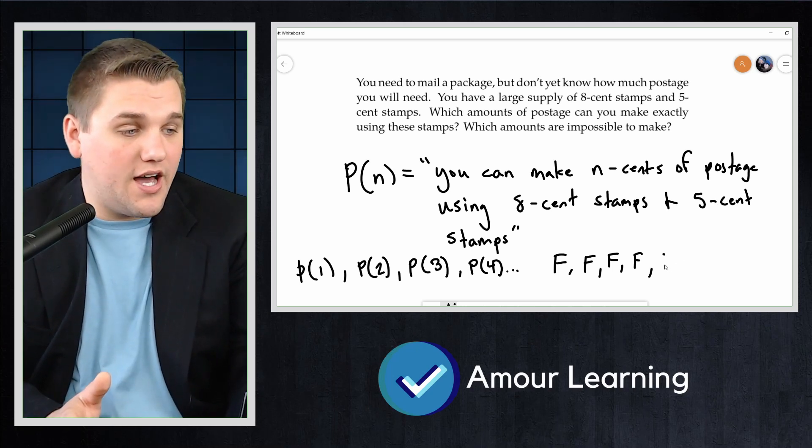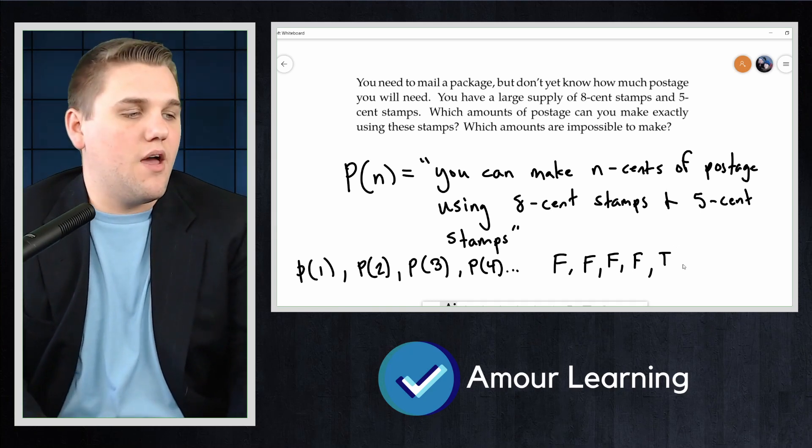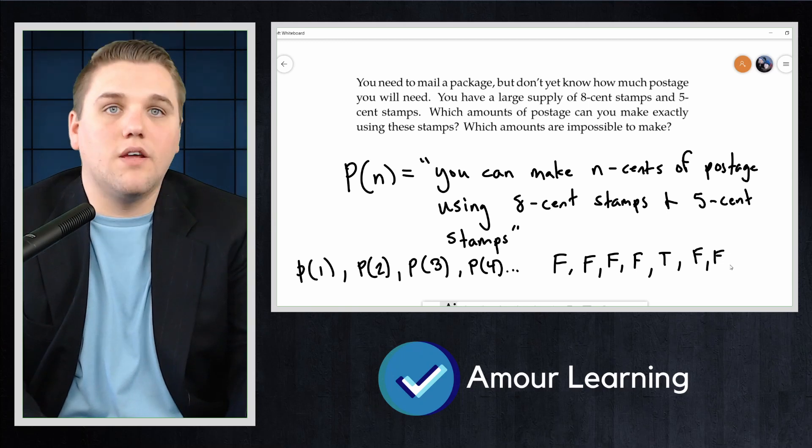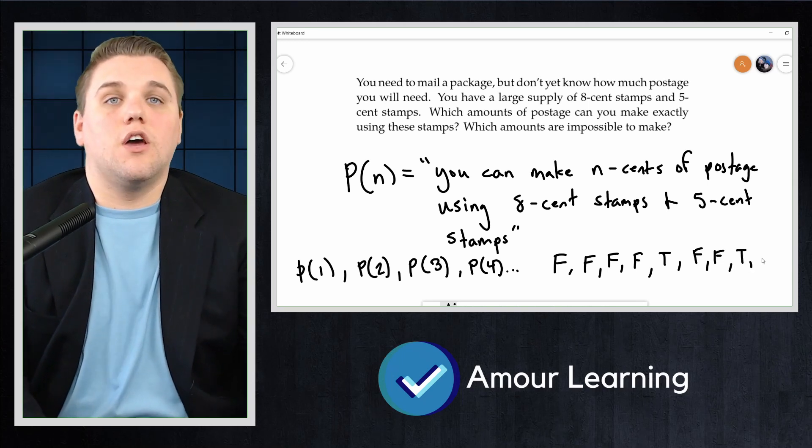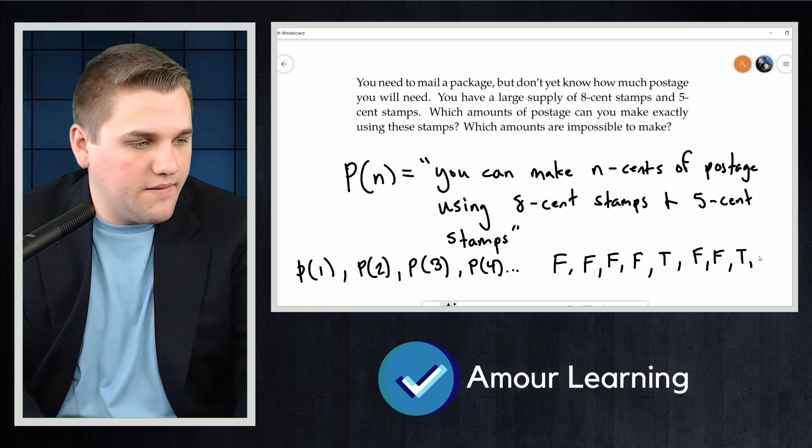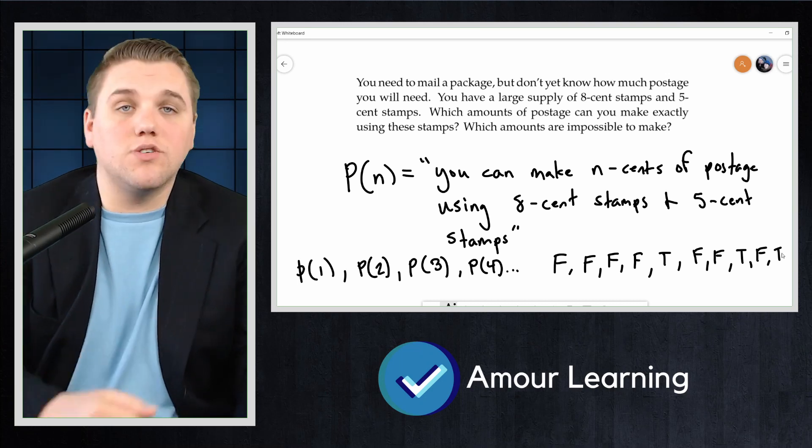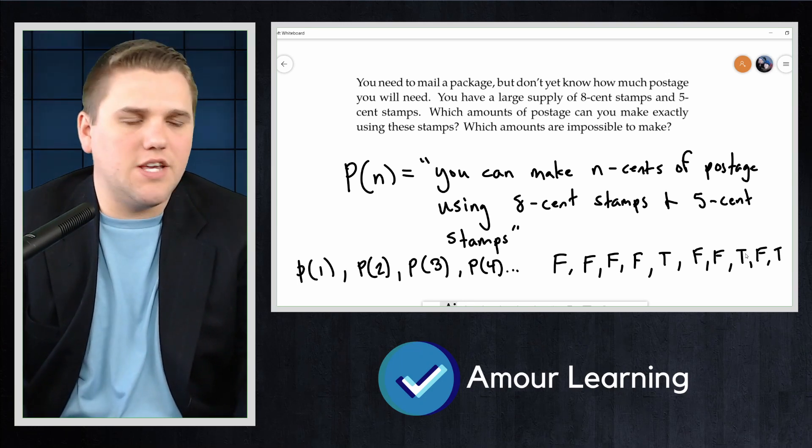But you can make 5 cents postage using one 5-cent stamp. You can't make 6. You can't make 7. You can make 8. That's possible. You can't make 9. You can make 10 by using two 5-cent stamps. And then, let me see if I get this right.